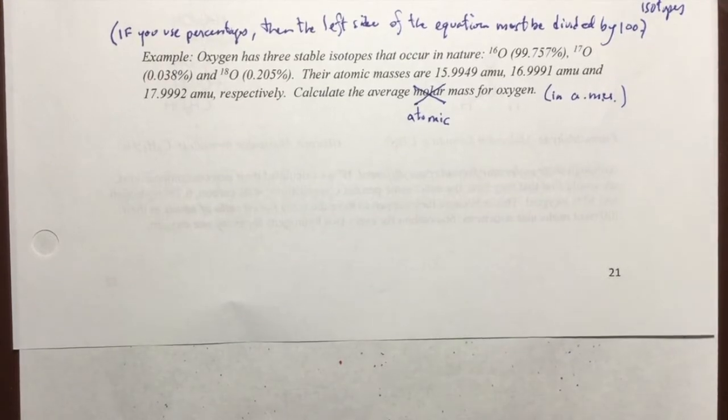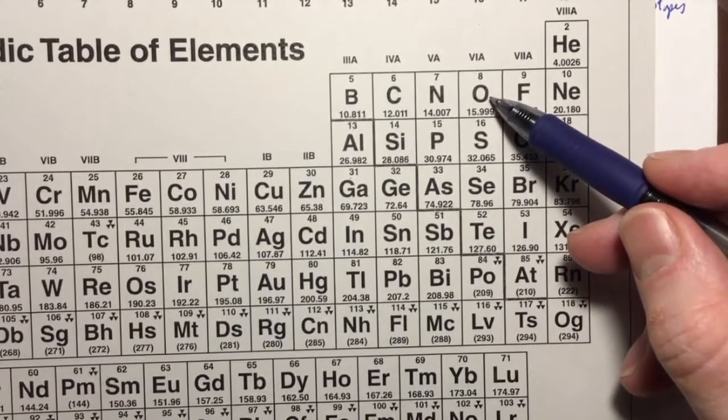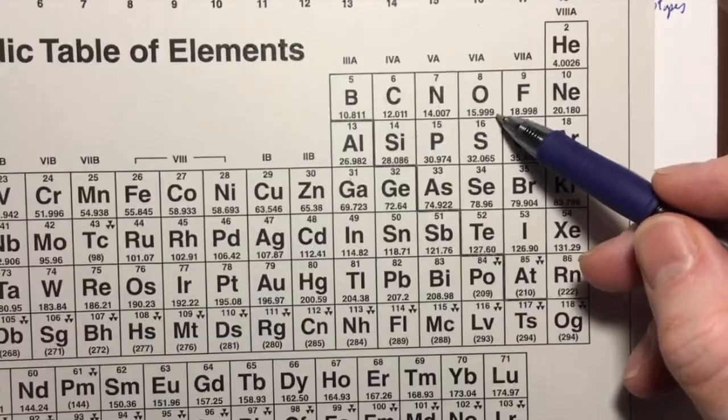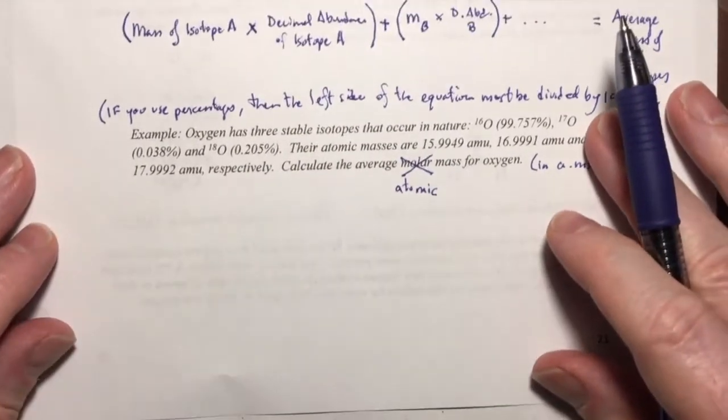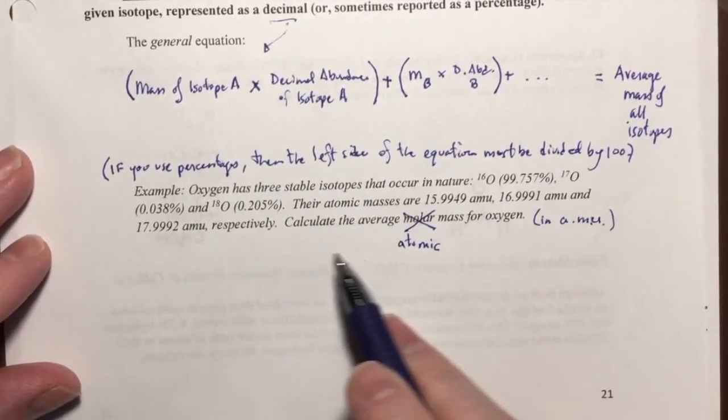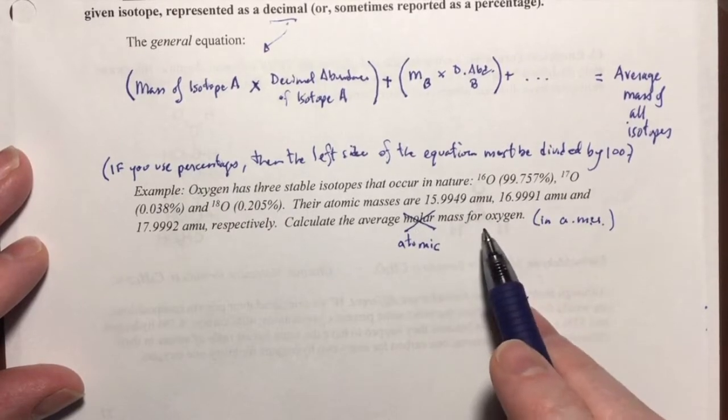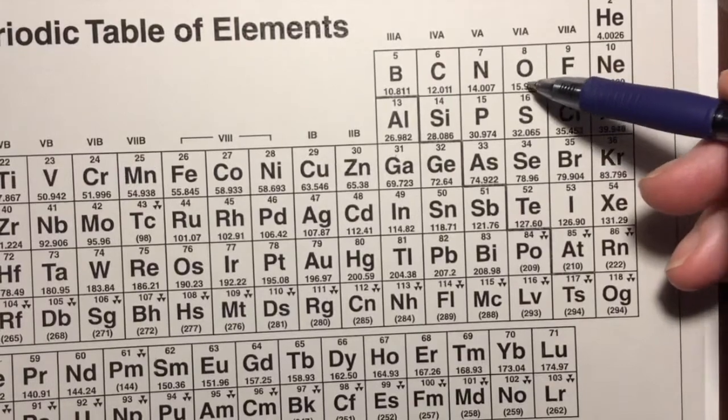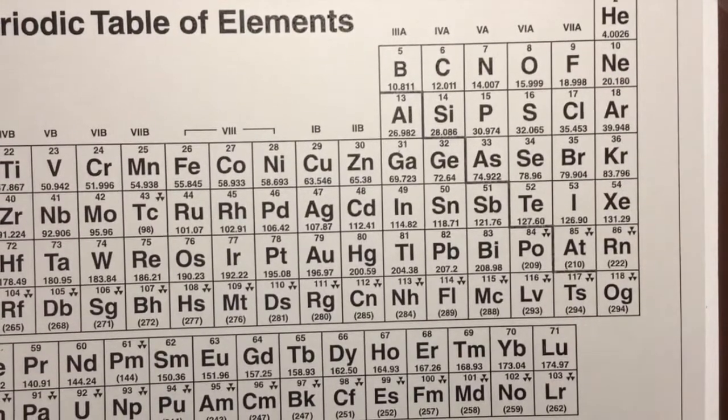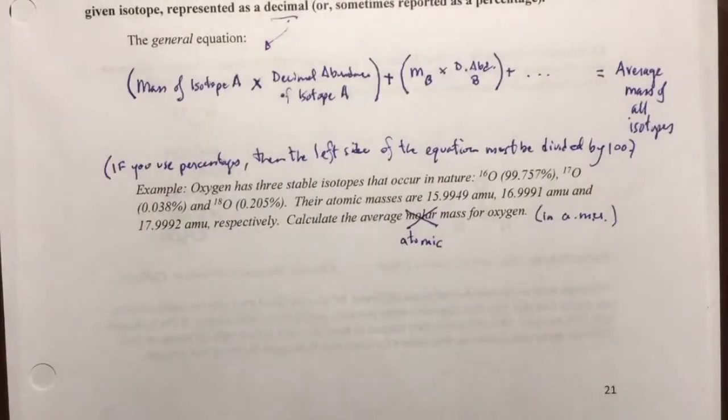You might be saying, wait a minute, why do we have to calculate that? Isn't that what this is? Isn't this the average atomic mass in AMUs for a single oxygen atom? Yes, it is. Absolutely. So, you do already have your answer on the periodic table. So, what's the point of this? The point of this exercise is because I want you to understand how isotope abundances and the different masses of each isotope go into the calculation for determining that average mass so that the number on the periodic table isn't some magic number. You'll know how we got it and that will help you understand a little bit more about what it means and how to use it.